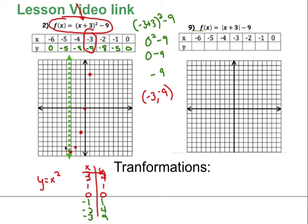Then I do the same thing on the other side. If a point is 1 over on the right, I make it 1 over on the left; 2 over becomes 2 over; 3 becomes 3. Then at the top: 1, 2, 3, 4 on the right mirrors 1, 2, 3, 4 on the left. You can join it together on your paper — it's a little harder when I'm doing it on my tablet.